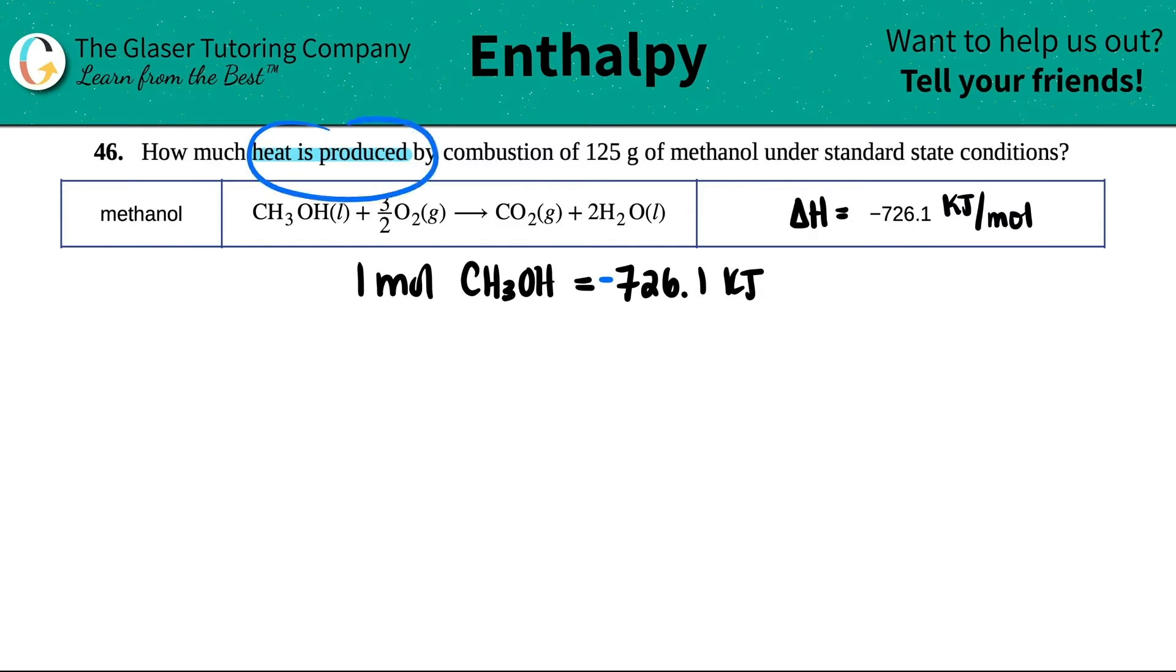Now we want to know how much is going to be produced by 125 grams of methanol, not one mole of methanol. I want 125 grams. So the first thing I have to figure out is, if I want to use this conversion factor, I first have to figure out how many moles of methanol there are.